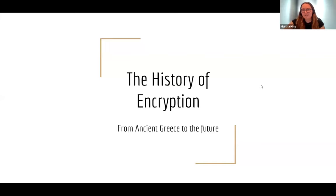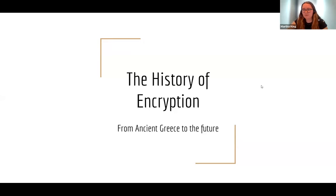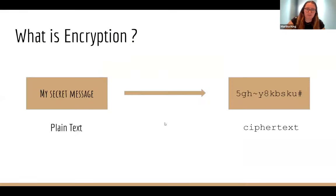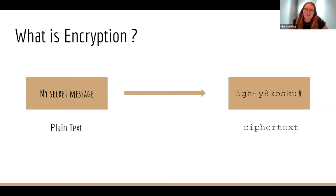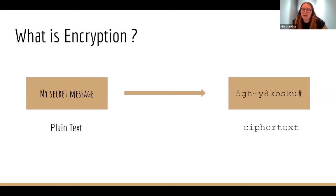Hi, so as Claire said I'm going to be giving a brief history of encryption. First of all, what is encryption? Encryption is the process of encoding messages so they remain secret and are only available to those we want to see them. This could be data, words, or anything. The readable message is referred to as the plain text and the output of the encryption is referred to as the cipher text.